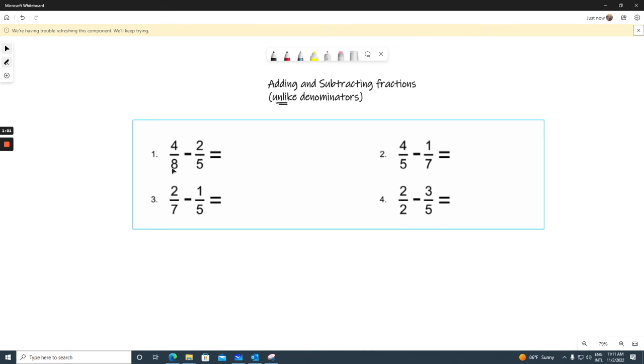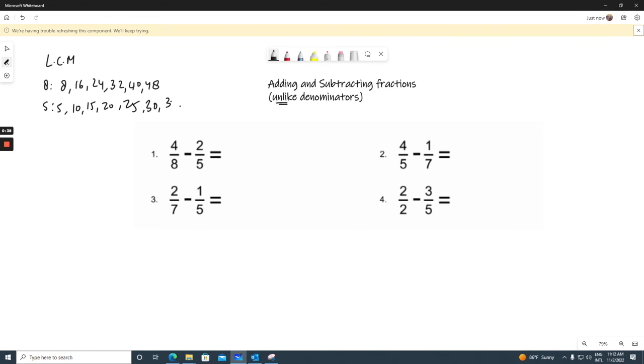We'll find the lowest common multiple of 8 and 5. I think I found one: 40 and 40.